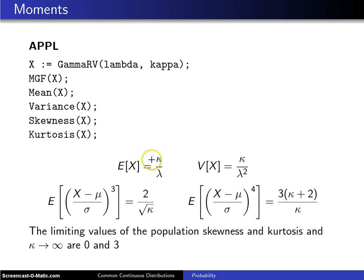you will get kappa over lambda for the mean, kappa over lambda squared for the variance, 2 divided by the square root of kappa for the skewness, and 3 times kappa plus 2 divided by kappa for the population kurtosis.